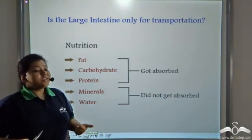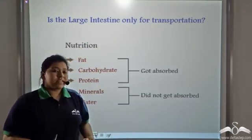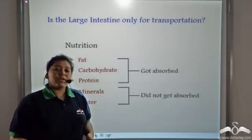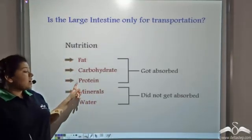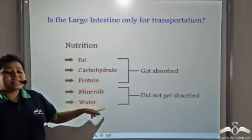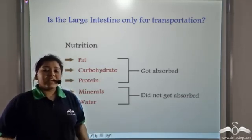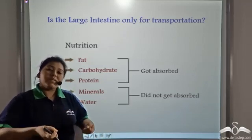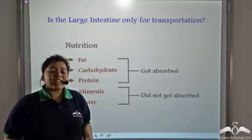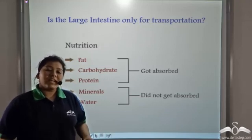So is the large intestine just a pathway for transportation of undigested and unabsorbed food? Till now we have seen that fats, carbohydrates and proteins have been absorbed by the small intestine. But there are two very essential nutrients that we require in our body that haven't been absorbed in much quantity previously. So the large intestine, when the unabsorbed food travels through it, absorbs water and minerals in excess amounts. So the large intestine does not only form a pathway for the food to travel, but it also absorbs water and minerals from the food.